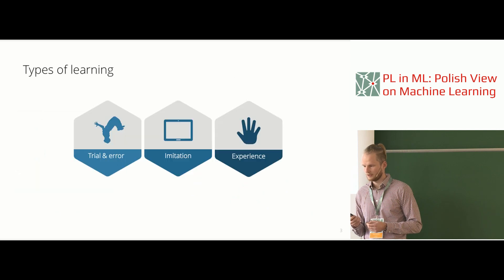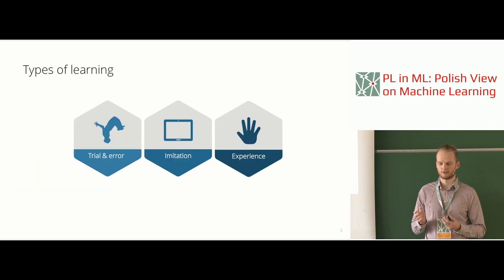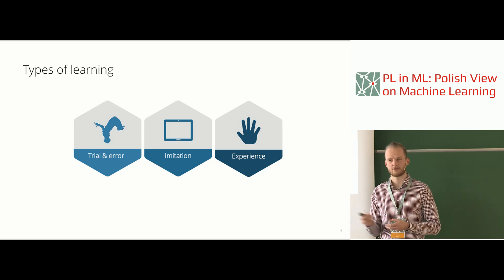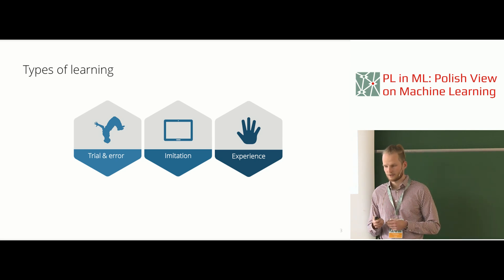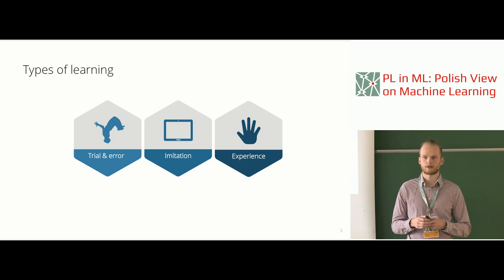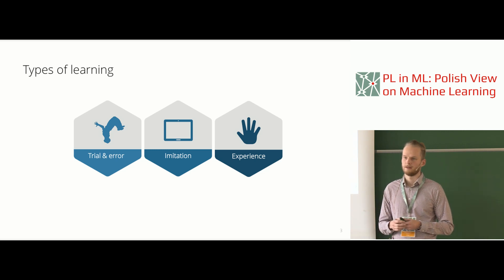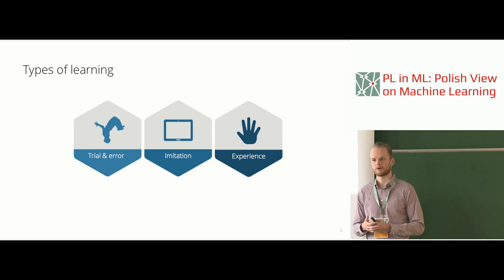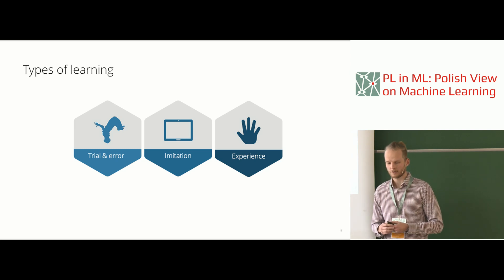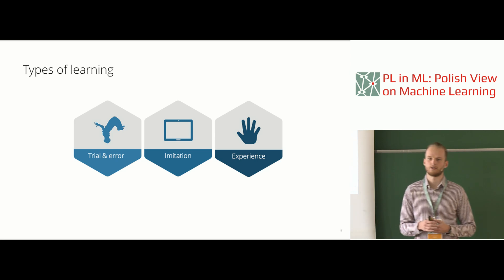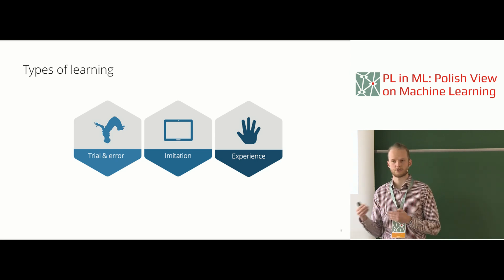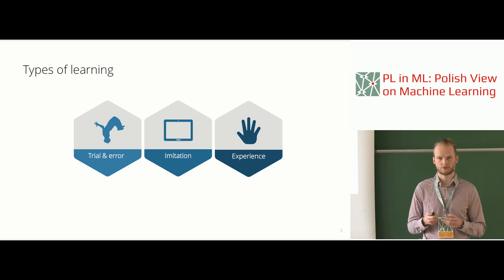I'd like to introduce a categorization of different types of learning, both for humans and in state-of-the-art robotics. The first category is learning by trial and error — the classic reinforcement learning paradigm. You start in a certain state, perform rollouts, get rewards, and iteratively find a policy that maximizes the sum of rewards. You assume you can reset to the same state every single time.